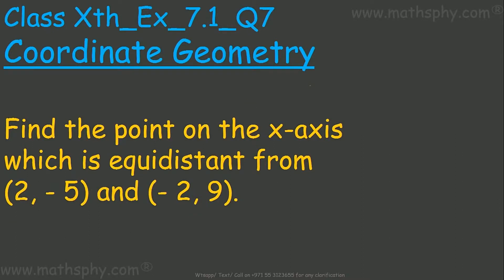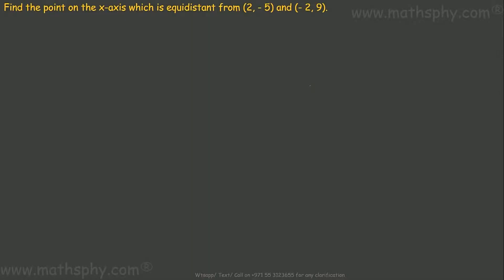This question says: find the point on the x-axis which is equidistant from the point (2, -5) and (-2, 9). It says equidistant from this point and this point, and that point falls on the x-axis.